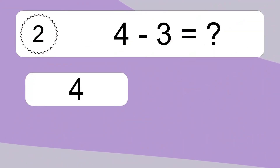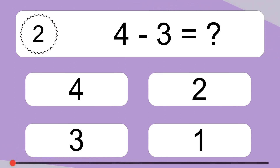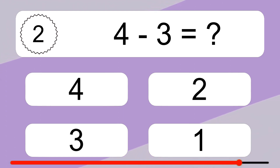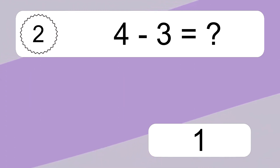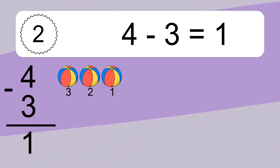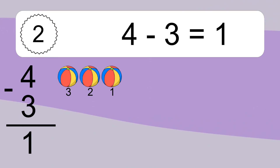4 minus 3 equals what? 4 minus 3 equals 1. Let's count it: 3, 2, 1.